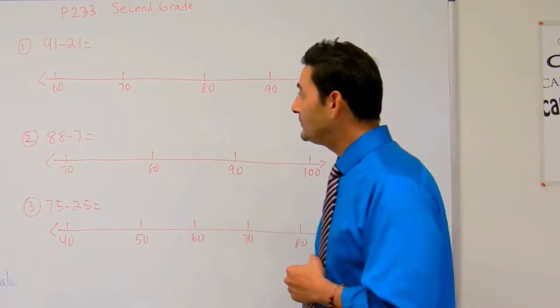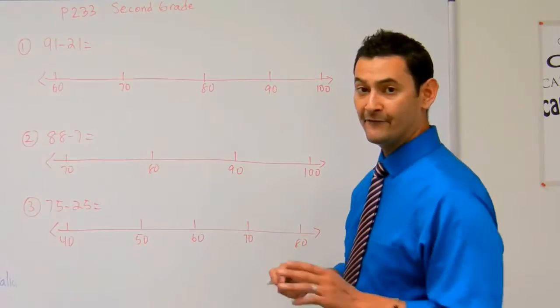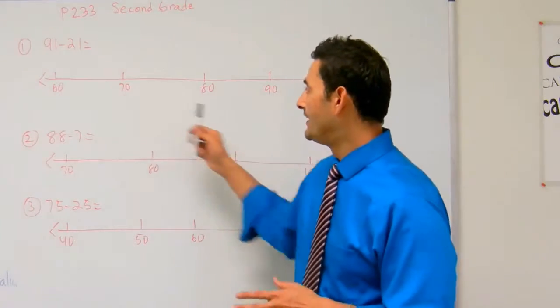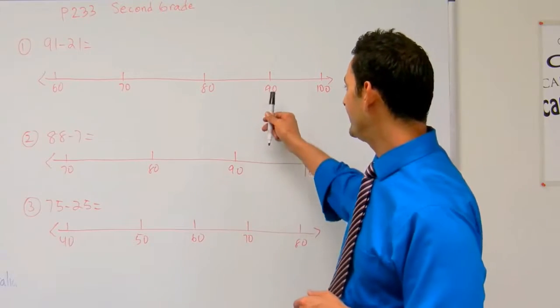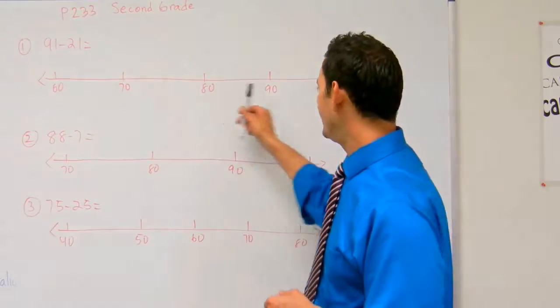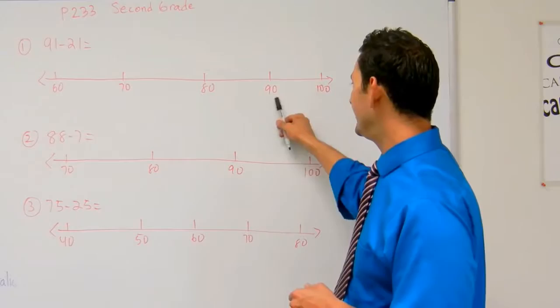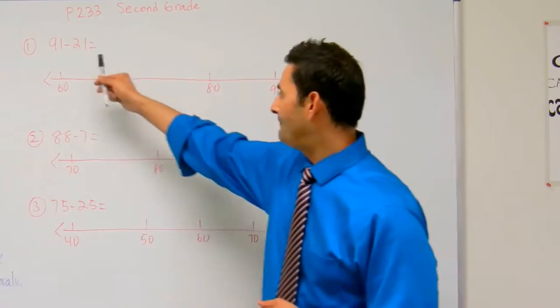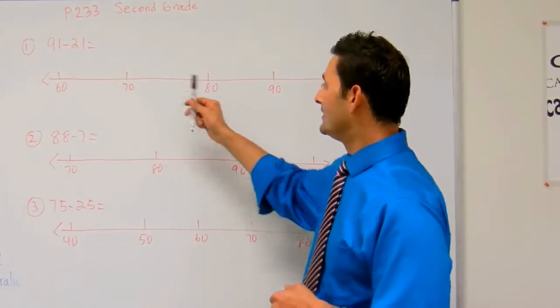Number 1 says 91 minus 21. First, I need to set up my number line. I'm going to start with 91, so I'll start with 90 and 100, then I have to jump back 20 spaces, actually 21.